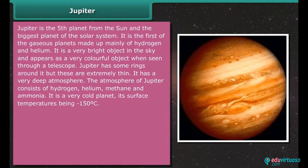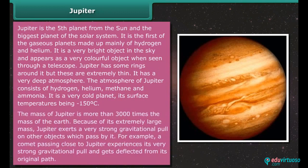It has a very deep atmosphere. The atmosphere of Jupiter consists of hydrogen, helium, methane, and ammonia. It is a very cold planet, its surface temperatures being minus 150 degrees Celsius. The mass of Jupiter is more than 3000 times the mass of the Earth. Because of its extremely large mass, Jupiter exerts a very strong gravitational pull on other objects which pass it by. For example, a comet passing close to Jupiter experiences its very strong gravitational pull and gets deflected from its original path.